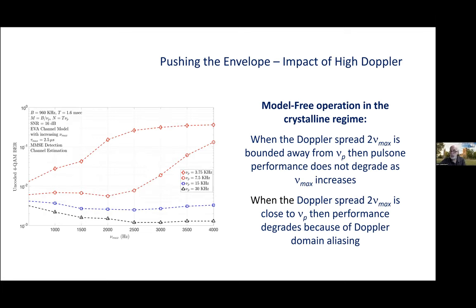So, here, what we're doing is we're pushing the envelope a little bit. So, we're exploring performance in the crystalline regime as we traverse the hyperbola, moving towards the corners, which are represented by TDM and FDM. So, here, we've fixed the SNR at 16 dB, and so performance is a function of the Doppler spread.